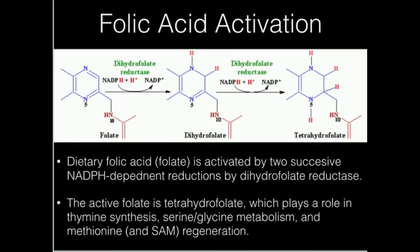Folate — shown on the left — is not yet active; we're only looking at the relevant portion of the molecule. Folate must first be converted to dihydrofolate, and then to tetrahydrofolate. Tetrahydrofolate is the active form capable of transferring one carbon. The enzyme that performs both reductions is dihydrofolate reductase, and the overall process requires two NADPHs.